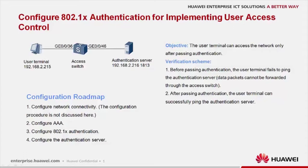After passing authentication, the user terminal can successfully ping the authentication server. We can perform the following steps to configure .1x authentication: step one, configure network connectivity; step two, configure AAA.